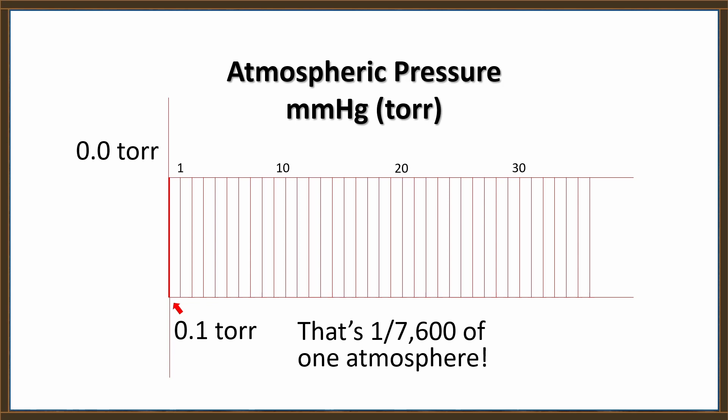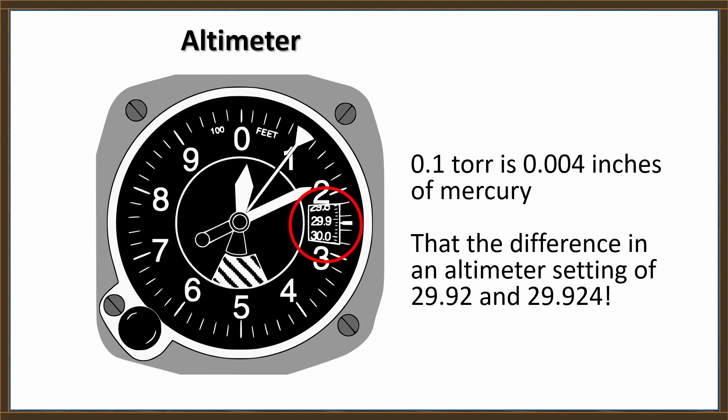When we blow it up, zero is the thin line at the top and 0.1 torr is the thin line on the bottom. The pressure differential is that little red line right there. It's one seven-thousand-six-hundredth of one atmosphere. That pressure difference is so slight I would not even be able to account for it when setting the altimeter in an aircraft. Stop trying to mislead people with huge numbers — we're really talking about one tenth of one millimeter of mercury. Maybe you ought to go back to school and learn this stuff.